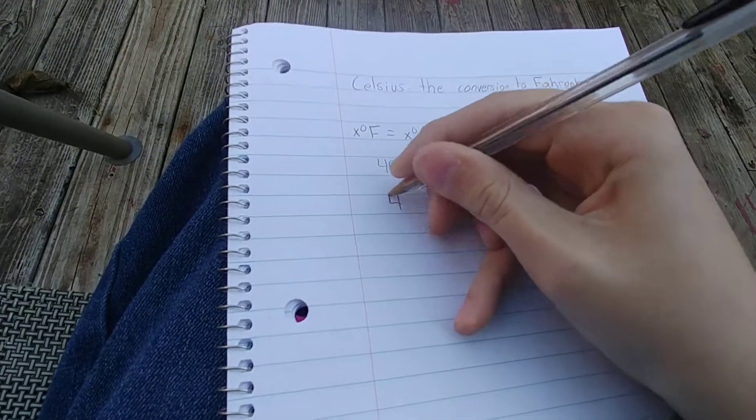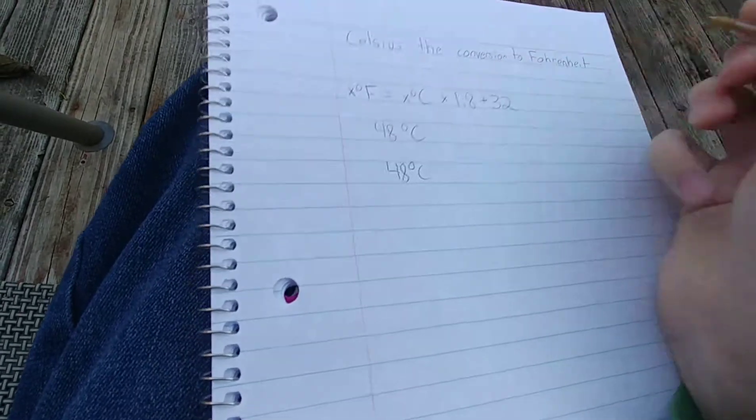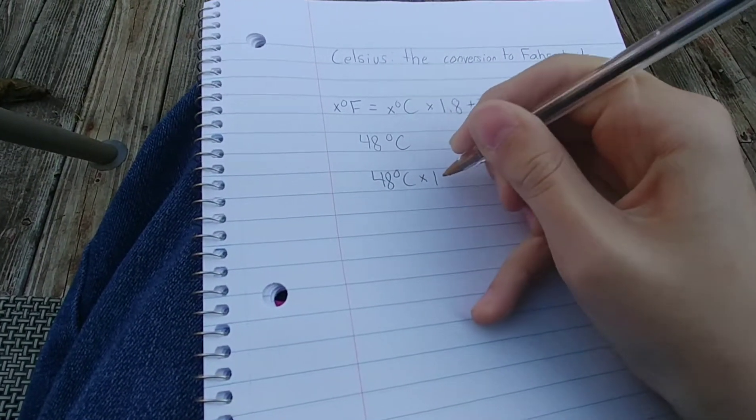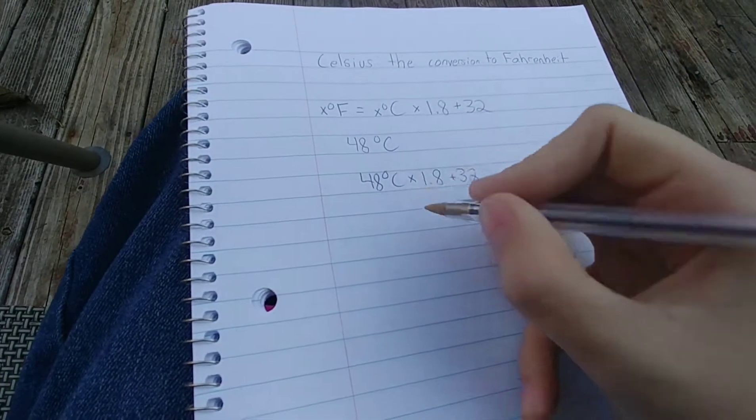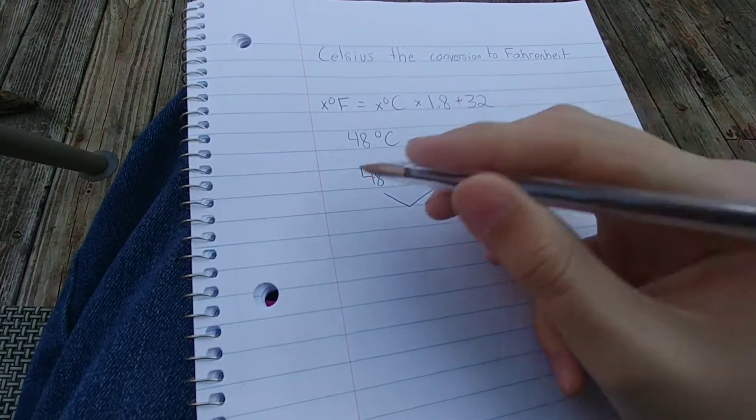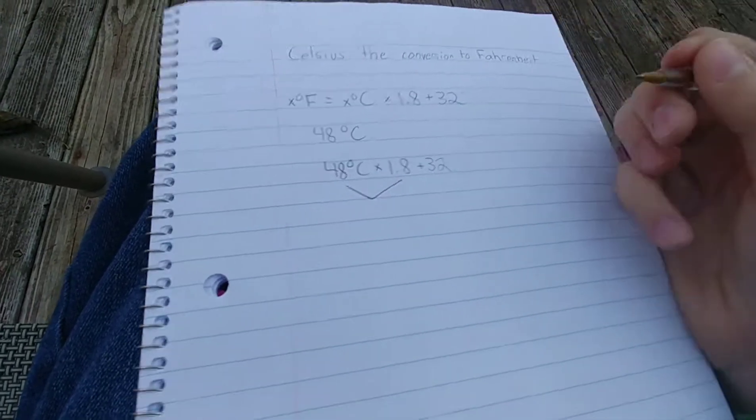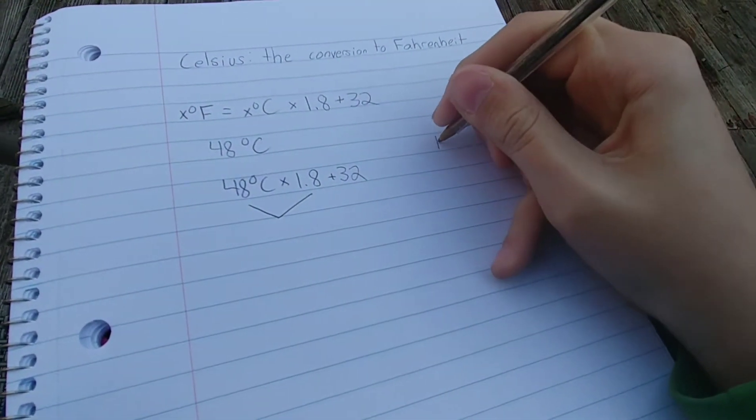What you would do first is write it out. Well, I'm writing it out, but here. First things first, what we would do is multiply 48 times 1.8.